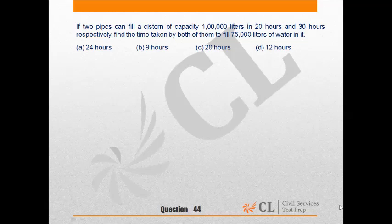Let us discuss question number 44. If two pipes can fill a cistern of capacity 1,00,000 liters in 20 hours and 30 hours respectively, find the time taken by both of them to fill 75,000 liters of water in it.